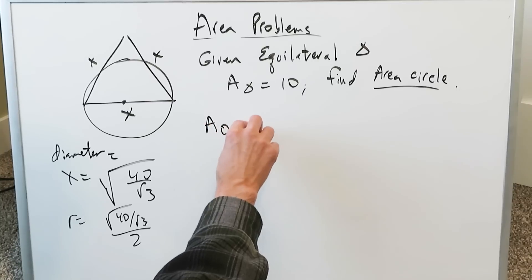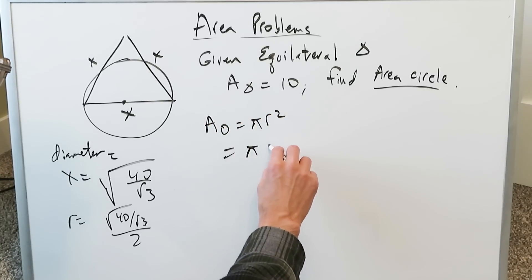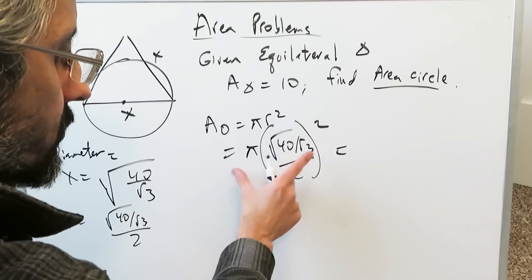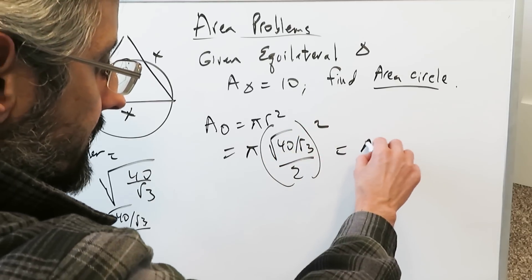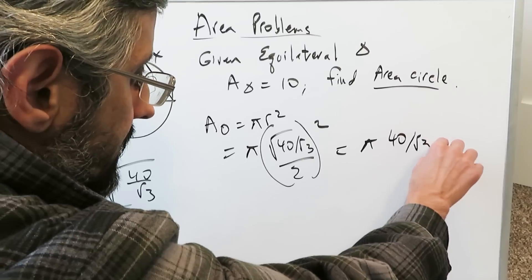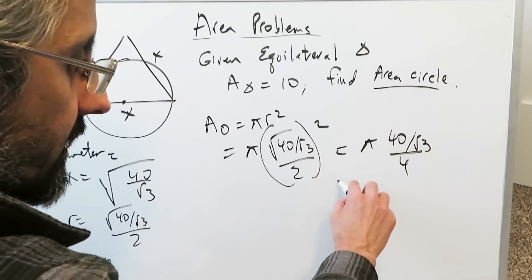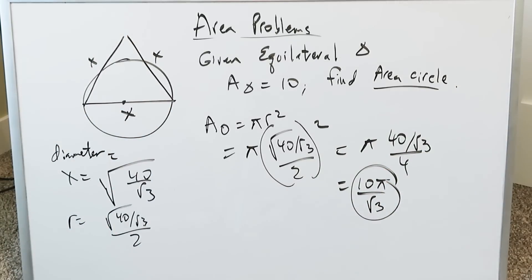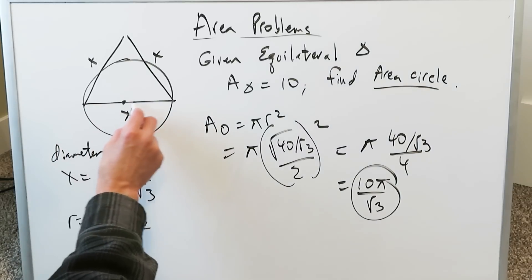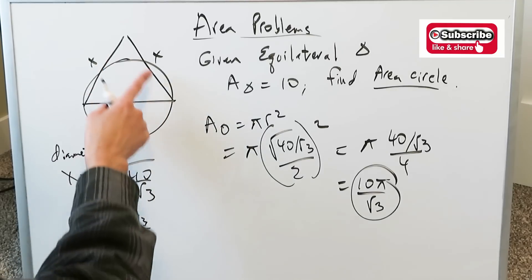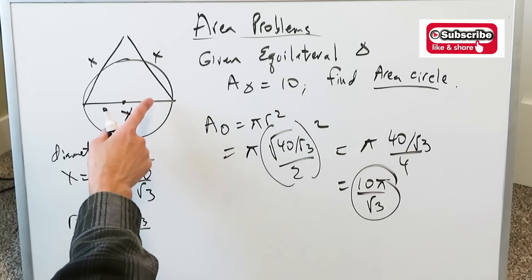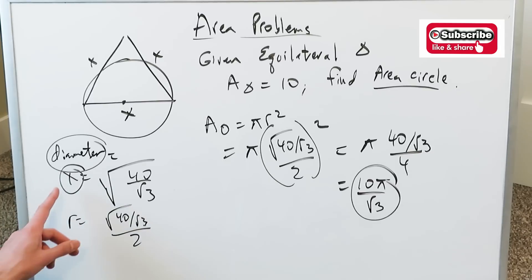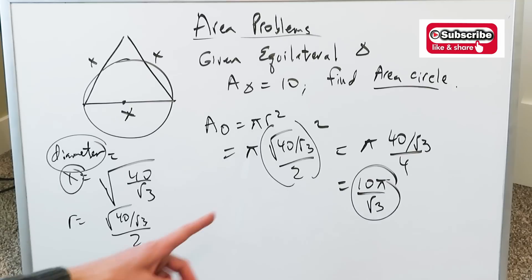The area of the circle is πr². Squaring the radius: (√(40/√3) / 2)² = (40/√3) / 4 = 10/√3. So the area of the circle is 10π/√3. Remember, you use the properties of the equilateral triangle and its area to determine the side length x, which equals the diameter. Divide by 2 to get the radius, then compute the area to completion.